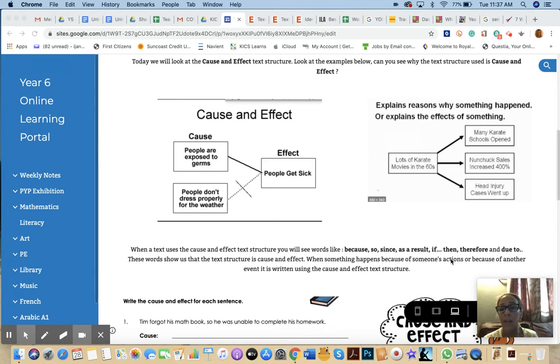Similarly, in the 60s, there were lots of karate movies. The effect of all these karate movies was that many karate schools opened, nunchuck sales increased by 400%, and head injury cases went up as well, probably from people trying to do karate at home. Those are the effects of the cause of having a lot of karate movies in the 60s.